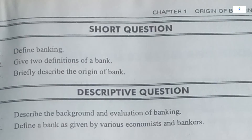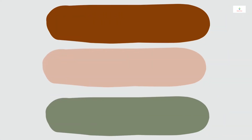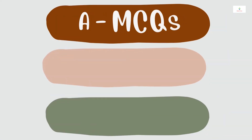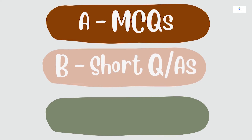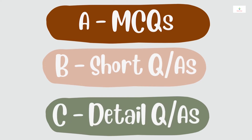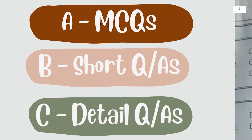Here we have some short questions. If I tell you about the paper, we have three sections: Section A, which has multiple choice questions; then Section B, where we have short questions and answers. The short question answers carry about five marks, and within five marks, you can give 6 to 10 lines in your answer.